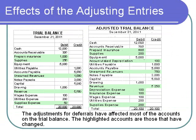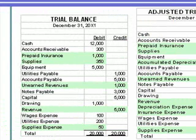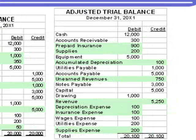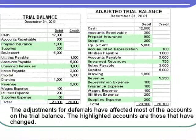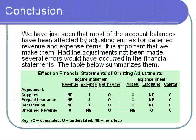This screen displays the original trial balance on the left side and on the right is the trial balance as it looks now after the adjusting entries have been made — this is referred to as an adjusted trial balance. The highlighted accounts are the ones that have changed as a result of our adjusting entries. Note that many if not most of the account balances did change. Therefore, if we want the information reported on the financial statements to be correct, it's very important that we make the adjusting entries and that we make them correctly.